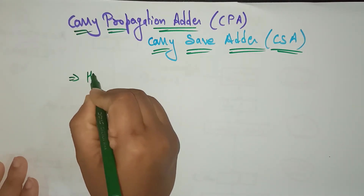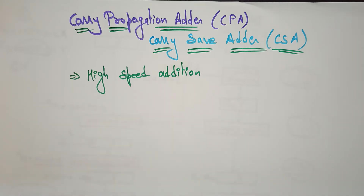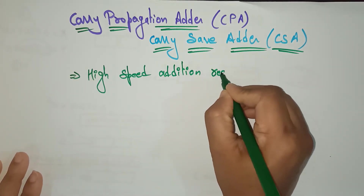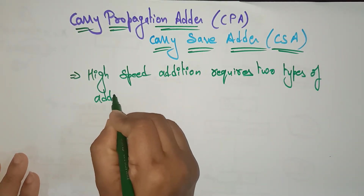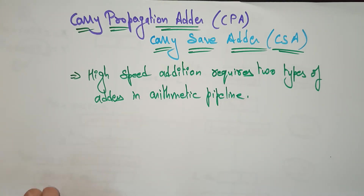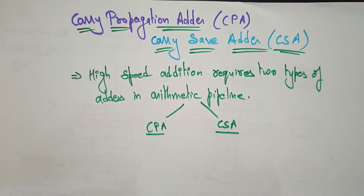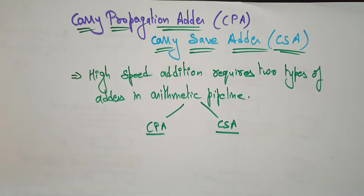For high speed addition, the pipeline organization itself requires high speed additions or subtractions, so everything should be high speed. For high speed addition we generally require two types of adders in the arithmetic pipeline: CPA and CSA. These are the two adders installed in the arithmetic pipeline to generate high speed additions.